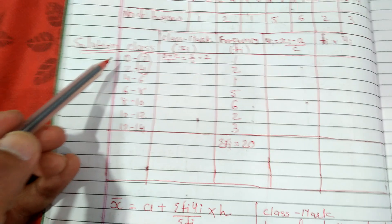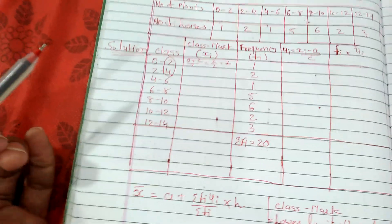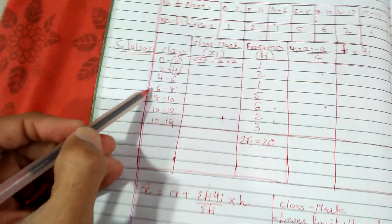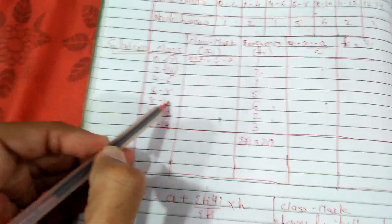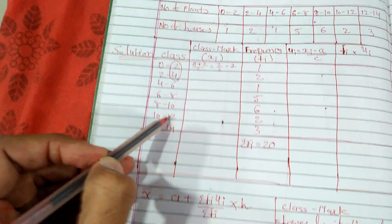It is not necessary to take the first two classes only. You can take any two consecutive classes. If I take these two classes, then here upper limit is 8 and upper limit is 10. 10 minus 8 equals 2. 14 minus 12 equals 2.